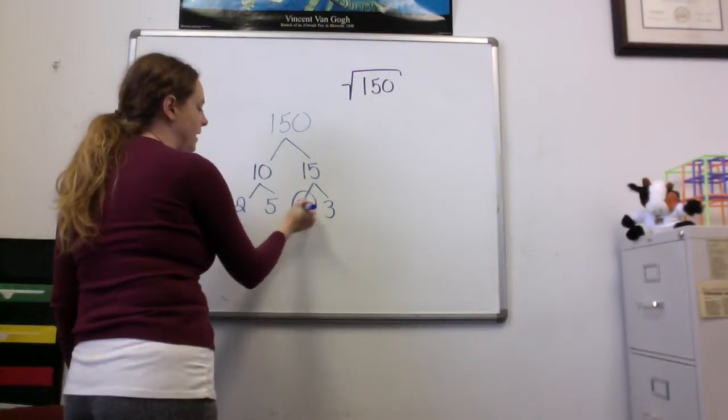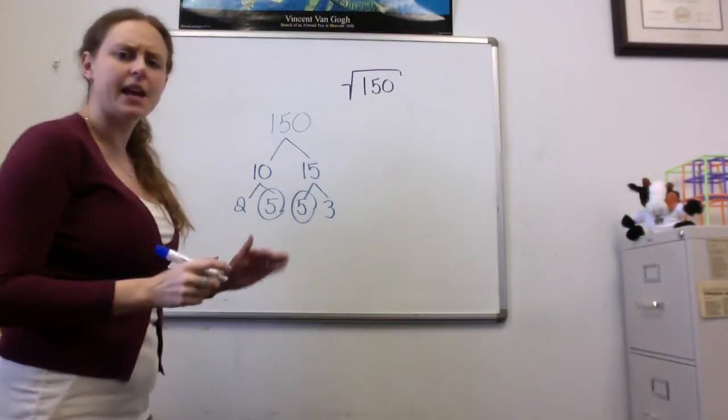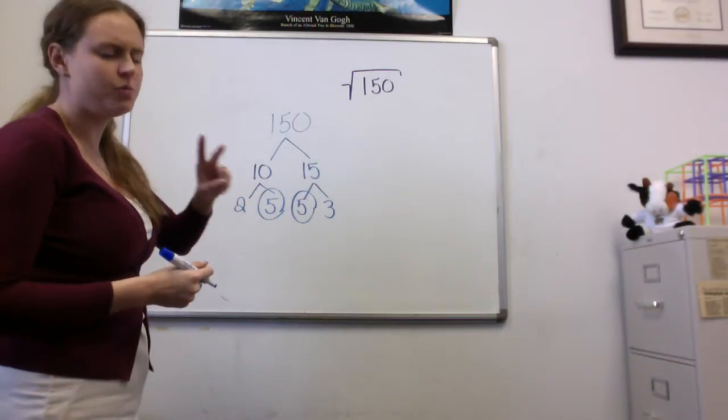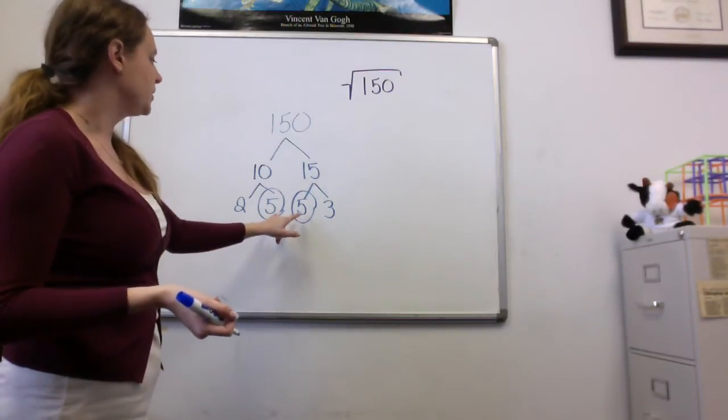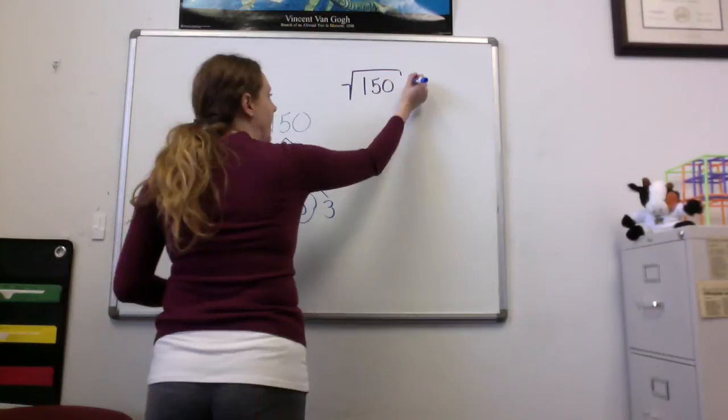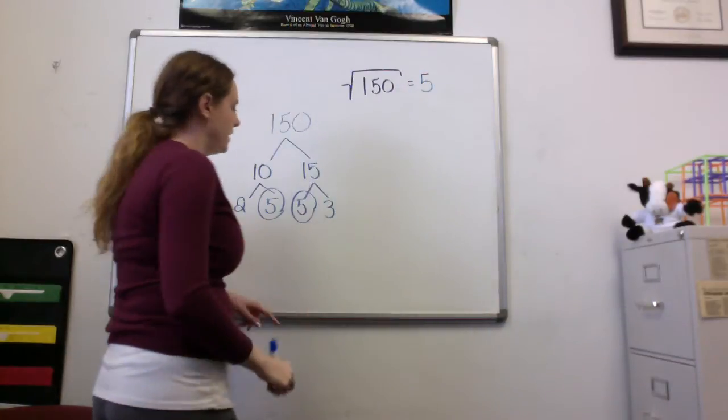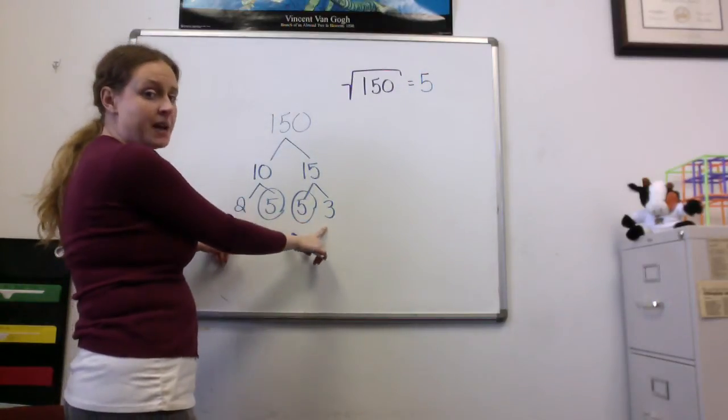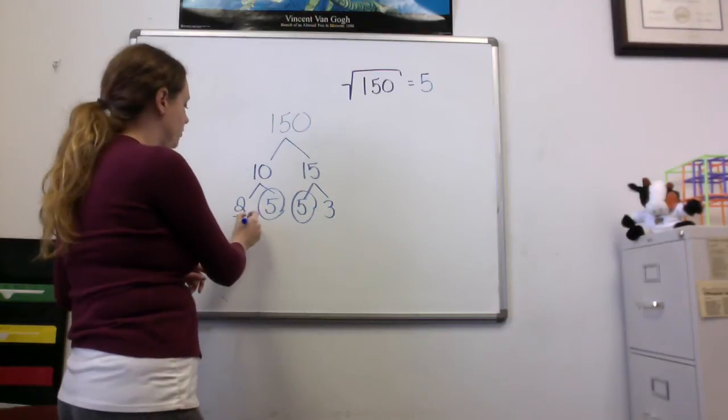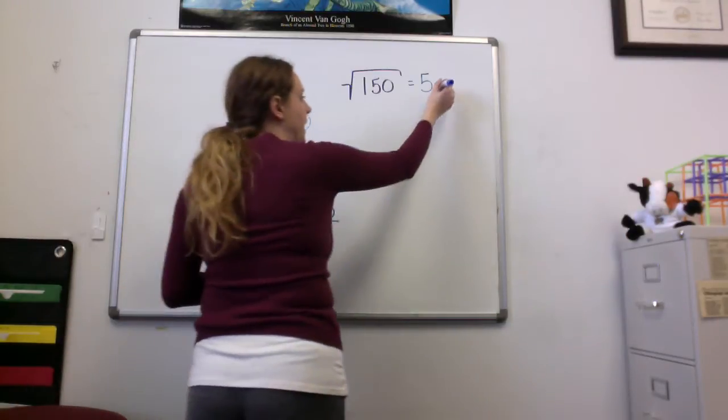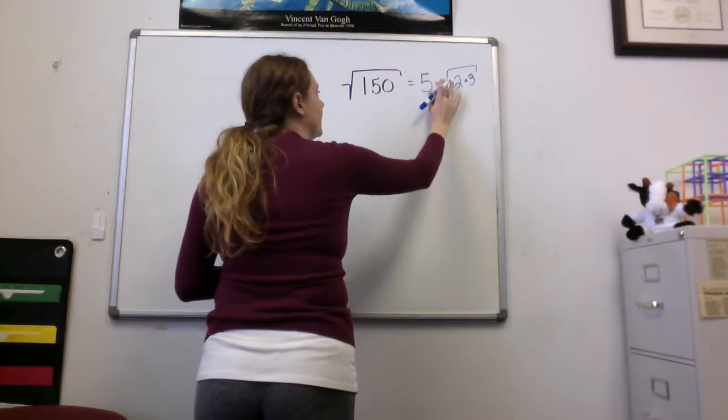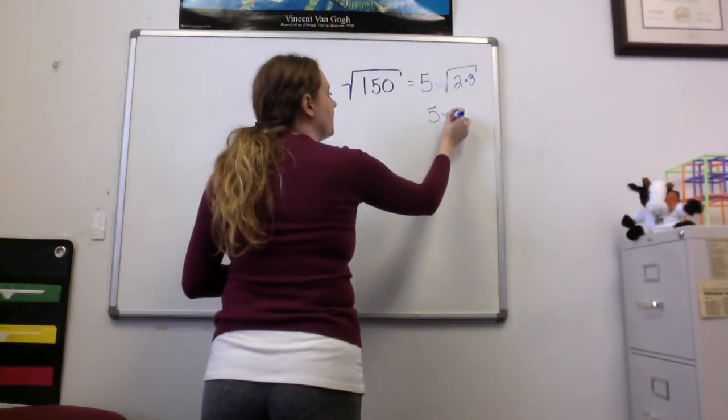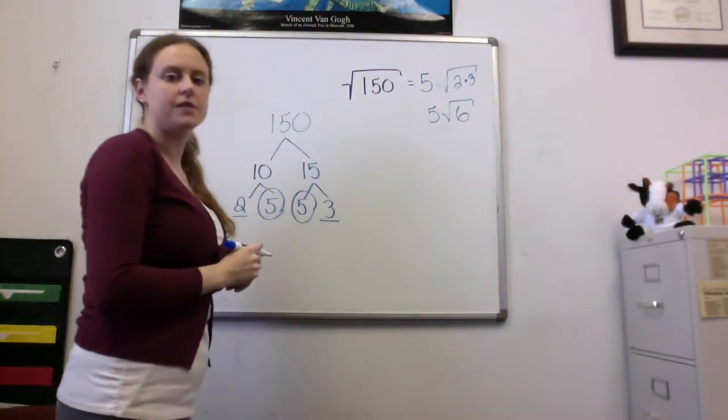Now the pair that I'm removing are 5s. It should be the same. You want your same color socks. You want two black socks. You don't want a black and a blue sock when you go outside. So this pair of socks is going to go on the outside. And these two numbers cannot be pairs because they're not the same. One's a 2 and one's a 3. They're going to go on the inside, back into my laundry basket. So I get 5 square roots of 6.